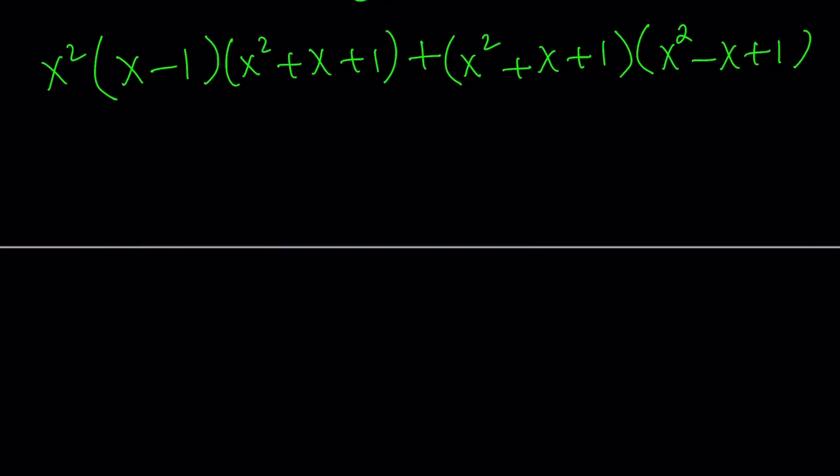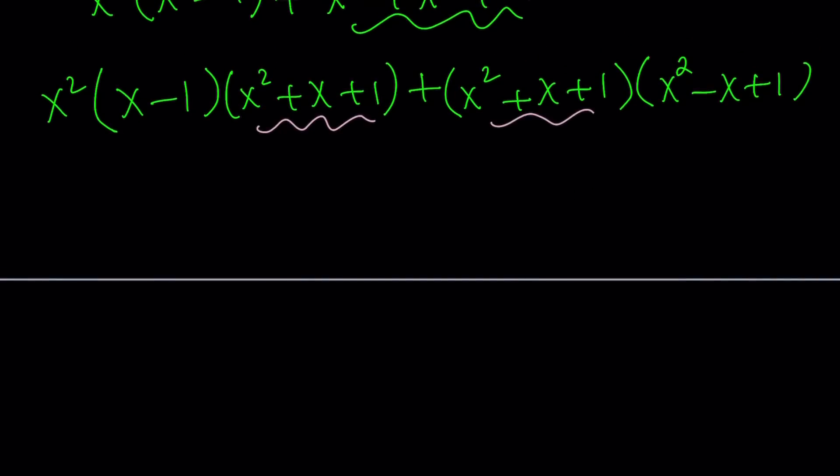Now, what are we going to do with this? We have a common factor. Like I said earlier, x squared plus x plus one is a common factor. I can take it out. And then the other factors are going to be x squared times x minus one. I can definitely distribute, right? And write it as x cubed minus x squared. And then plus this is the plus sign right here, and now we're here, x squared minus x plus one.